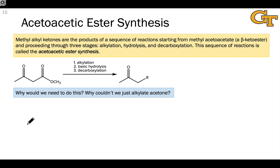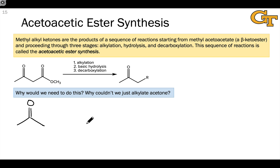In the last video, we introduced the alkylation of enolates as a strategy for forming new carbon-carbon bonds at the alpha-carbons of aldehydes, ketones, and esters. One thing we noted is that alkylation has some problems. For example, if we want to generate a highly substituted alkylated ketone, going through a thermodynamic enolate generally doesn't work.